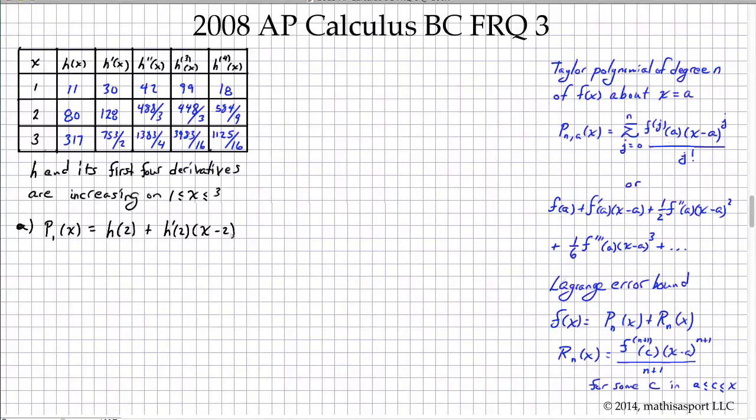That would ordinarily be over 1 factorial but there's no reason for me to put that in because 1 factorial is just 1. Similarly h of 2 formally is going to be over 0 factorial but that's also 1. So now let's put in the values that they've given us. Namely h of 2 is 80, h prime of 2 is 128, and x itself is 1.9.